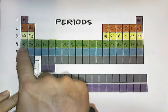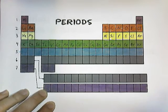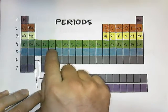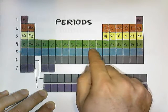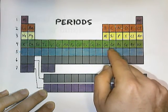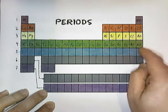Period four contains potassium, calcium, scandium, titanium, vanadium, chromium, manganese, iron, cobalt, nickel, copper, zinc, gallium, germanium, arsenic, selenium, bromine, and krypton.